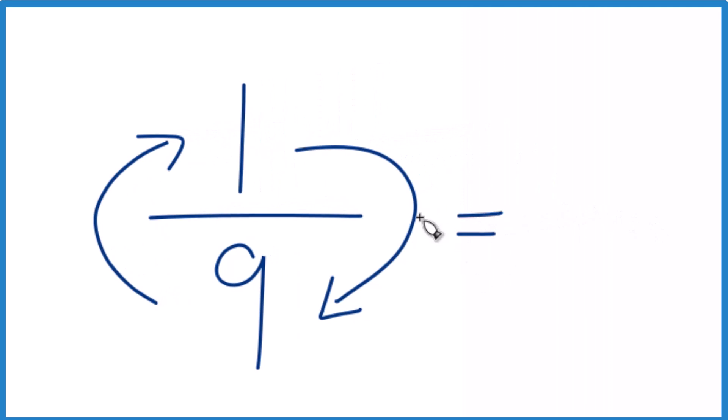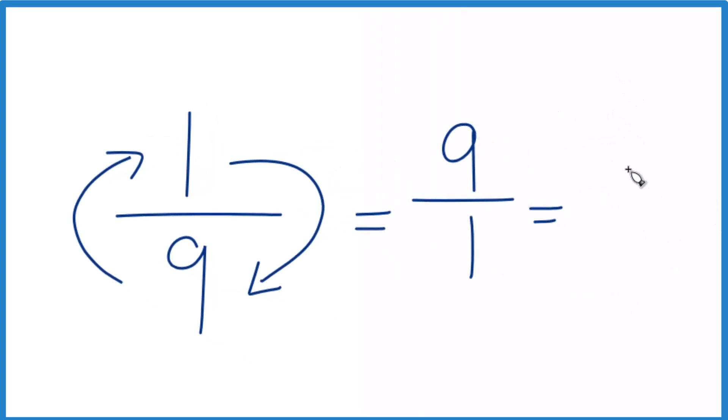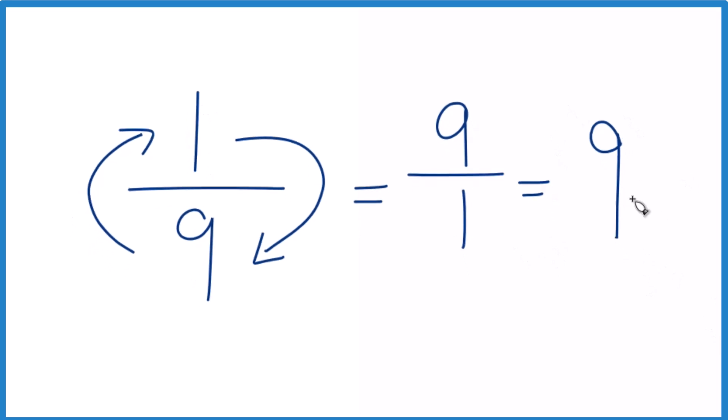So for one-ninth, to find the reciprocal, we put nine up top. That's our numerator. And we move the one down to the bottom. That's our denominator. So the reciprocal for one-ninth equals nine over one. And nine divided by one, that's just nine. So we could say the reciprocal for one-ninth is nine.